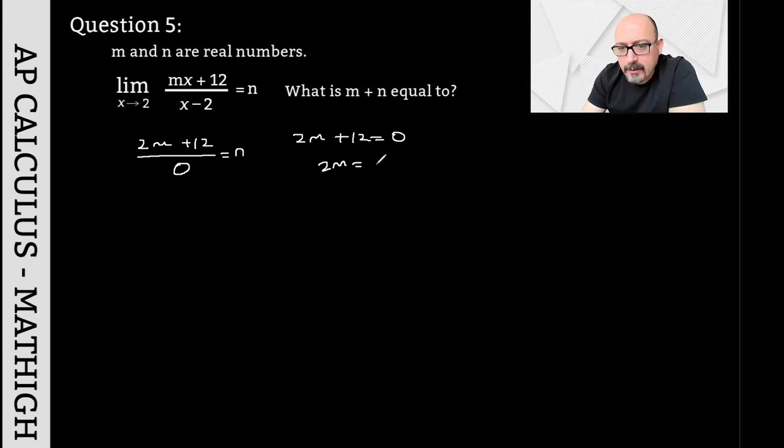In this case, the first thing I need to do is to say that 2m plus 12 equals 0. So, 2m equals negative 12, m equals negative 6. I have found the first expression that was asked of me.